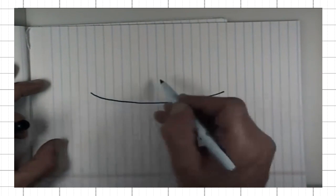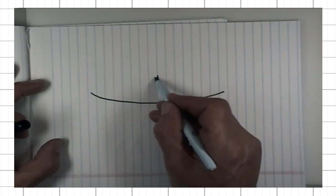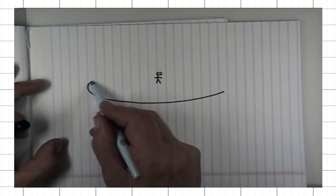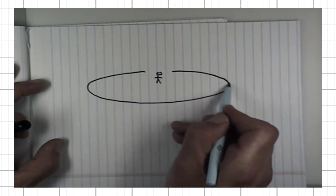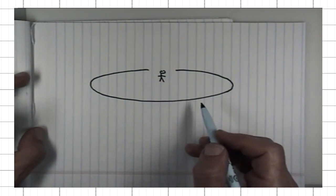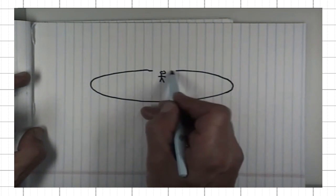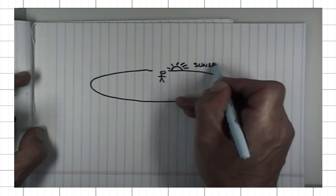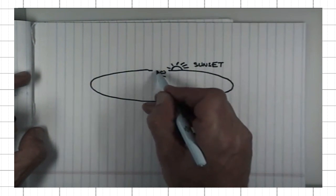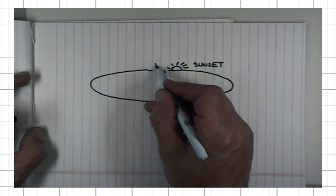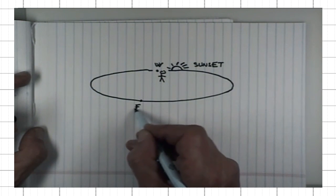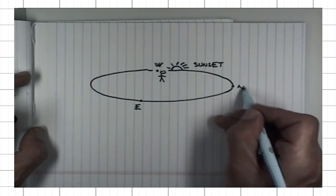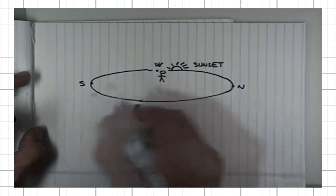Say this is an observer at our latitude, and say that today at sunset — the sun sets in the west, it rises in the east — this is the north point and the south point on the horizon.